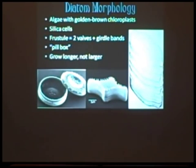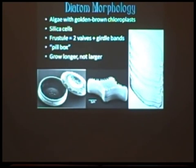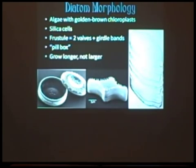They're usually divided into two parts — it's called a frustule. The whole box is a frustule, and they're kind of shaped like a pill box, with one side larger than the other. That has some implications for how they reproduce and grow. They have two valves, which are the faces, and they're held together by girdle bands. When they grow, they don't grow larger in diameter — they grow taller, like a stack of pancakes. They just keep dividing, and every time they divide, they add a girdle band or so.